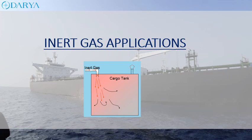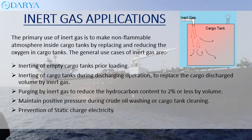The primary use of inert gas is to create a non-flammable atmosphere inside cargo tanks by replacing and reducing the oxygen. The general use cases of inert gas are: 1. Inerting of empty cargo tanks prior to loading. 2. Inerting of cargo tanks during discharging operations to replace the discharged cargo volume with inert gas. 3. Purging by inert gas to reduce the hydrocarbon content to 2% or less by volume. 4. Maintaining positive pressure during crude oil washing or cargo tank cleaning. 5. Prevention of static charge electricity.